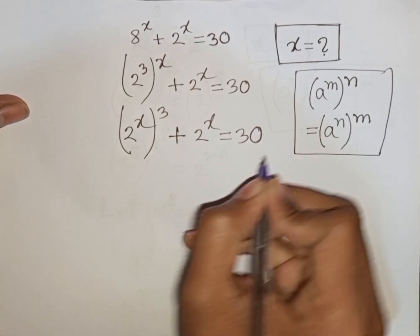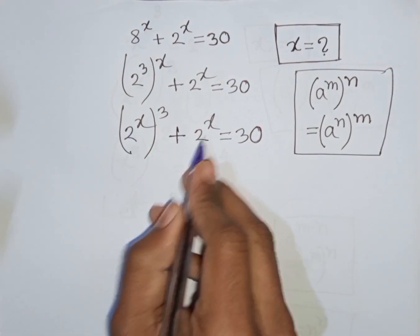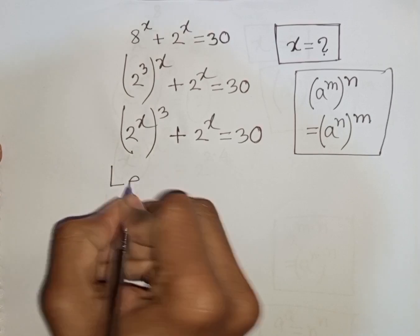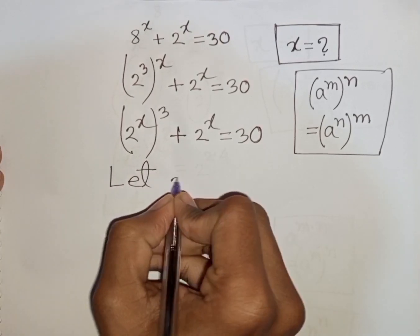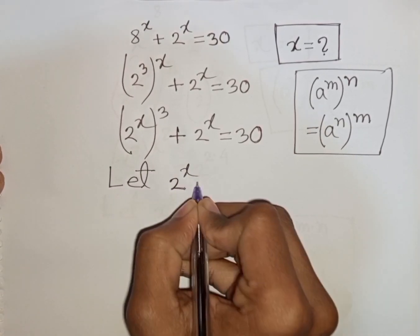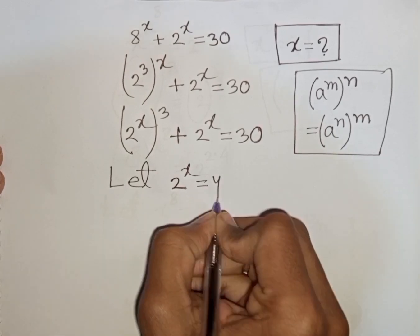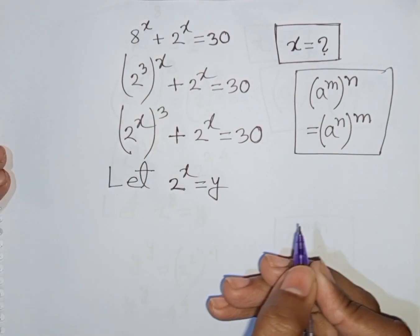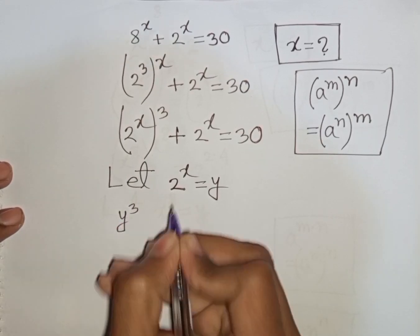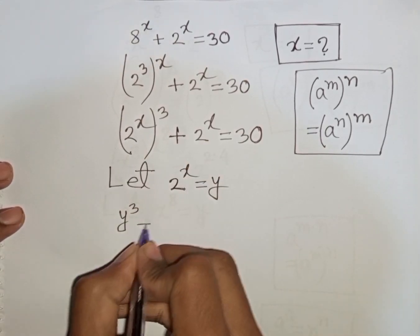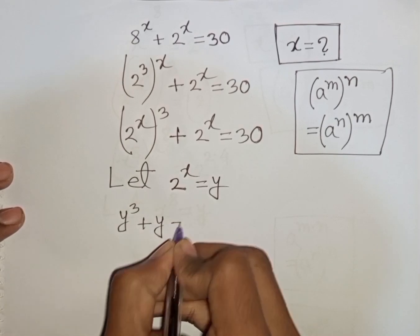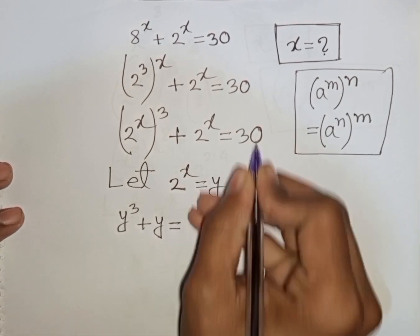Now we see 2 power x and 2 power x — both terms are the same. So let 2 power x be substituted by y. So our equation will be y cubed plus y is equal to 30.